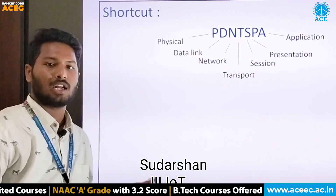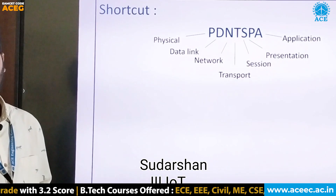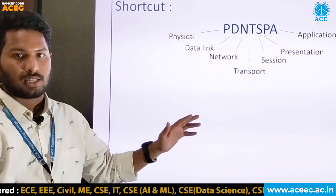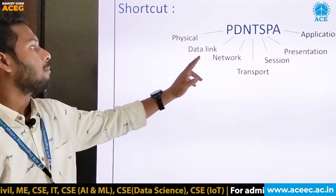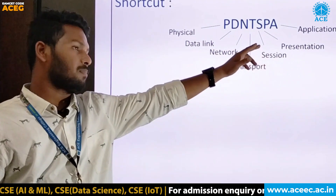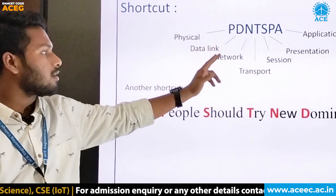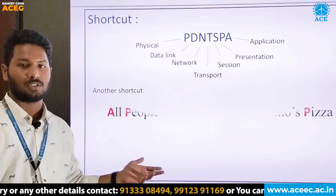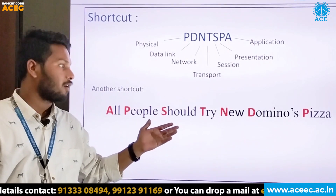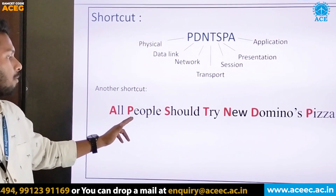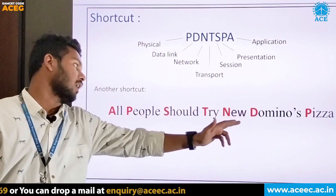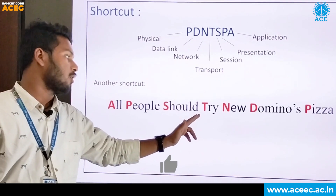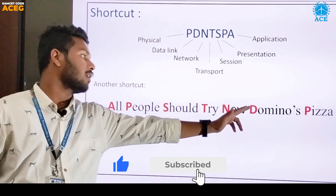Now that you've seen all the layers, here are shortcuts to remember them. Going from the first to the seventh layer, the acronym is PDNTSPA, representing Physical, Data Link, Network, Transport, Session, Presentation, Application. Going top-down, another mnemonic is: 'All People Should Try New Dominos Pizza,' representing Application, Presentation, Session, Transport, Network, Data Link, and Physical.